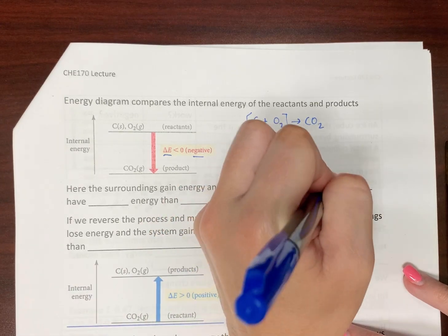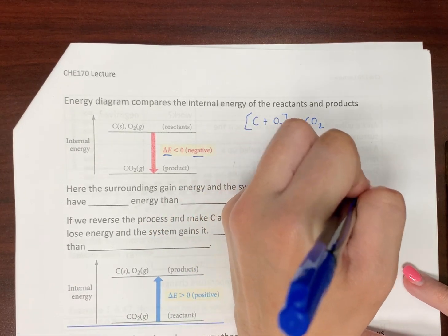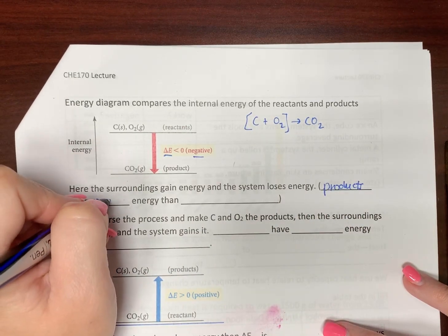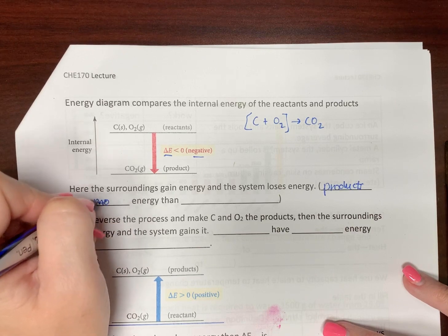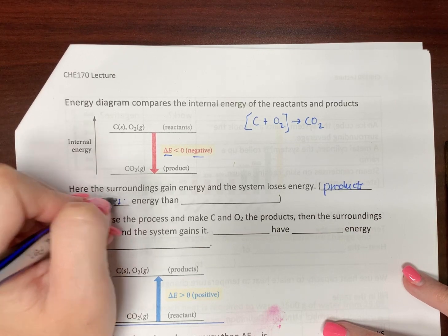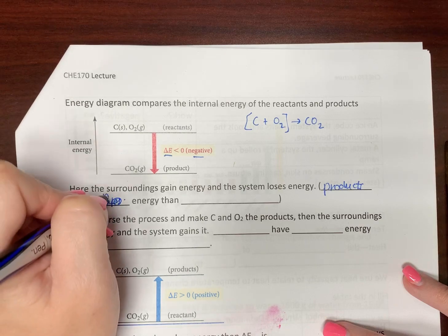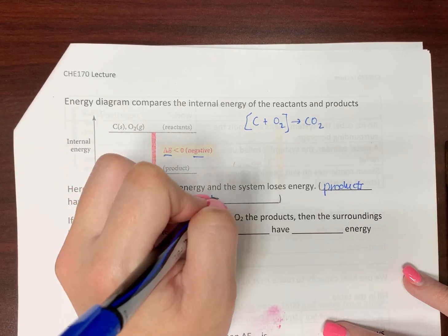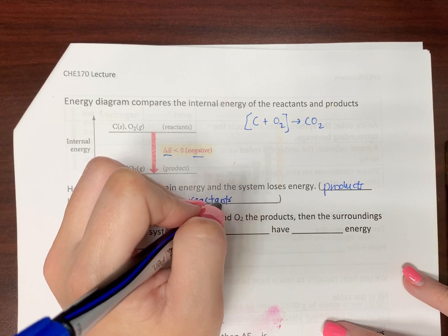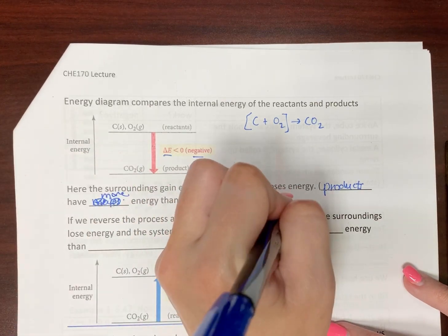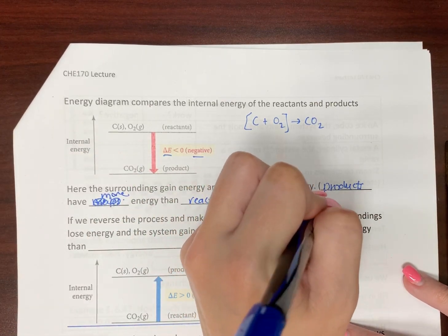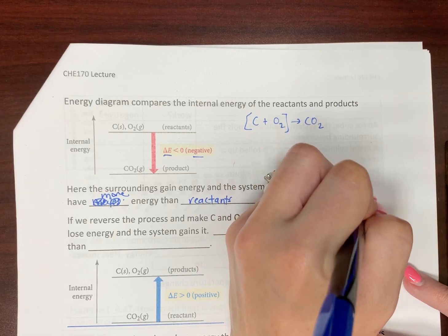And, so, that means your products have less. No, they have more. They have more energy than the reactants. So, we would say energy is released by the system.